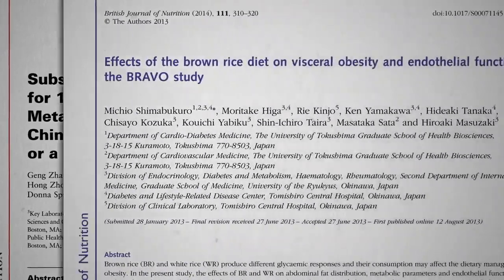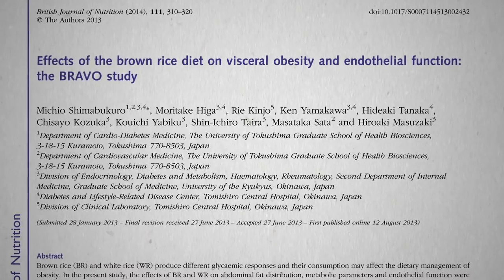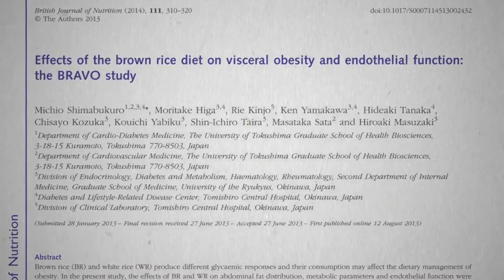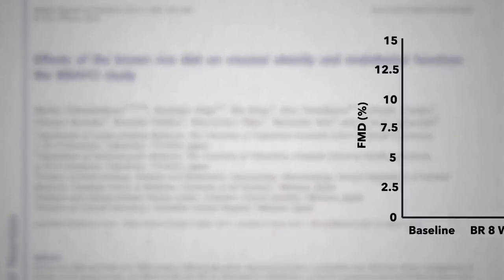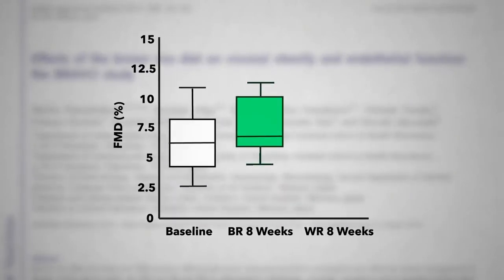But then this study rolled around. This is probably the single most important study on the pro-rice side, showing a significant improvement in artery function after eight weeks of eating about a cup of brown rice every day, but not white.